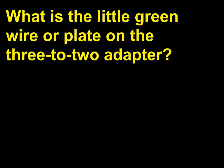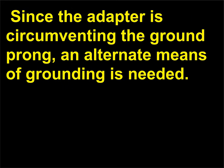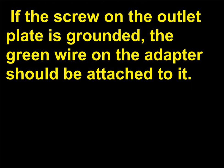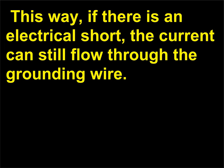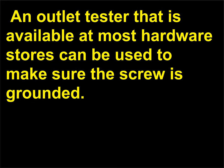What is the little green wire or plate on the 3-2 adapter? The green wire or metal tab attached to adapters is the grounding wire. Since the adapter is circumventing the ground prong, an alternate means of grounding is needed. If the screw on the outlet plate is grounded, the green wire on the adapter should be attached to it. This way, if there is an electrical short, the current can still flow through the grounding wire. If the screw is not grounded, then the adapter should not be used. An outlet tester that is available at most hardware stores can be used to make sure the screw is grounded.